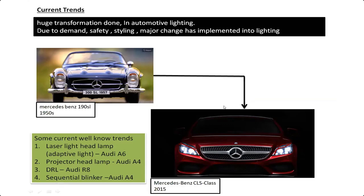The sequential blinker — meaning the indicator — is another major trend. On a regular basis, you may have seen the indicator blinking one at a time, but in the sequential blinker, as seen in the Audi A4, LEDs light up one by one in sequence and then go off. This is called a sequential blinker. Major changes have been implemented into lighting based on demand and safety requirements.